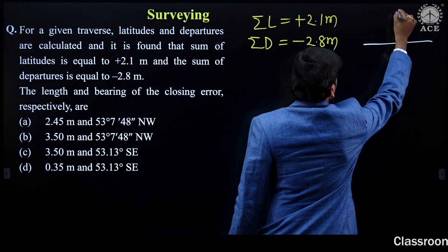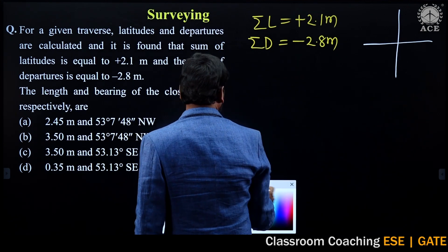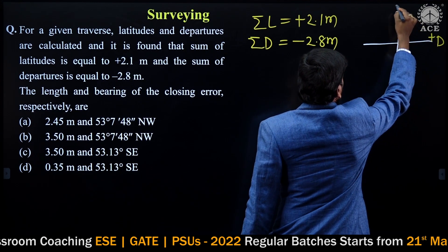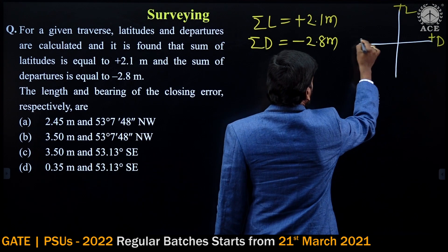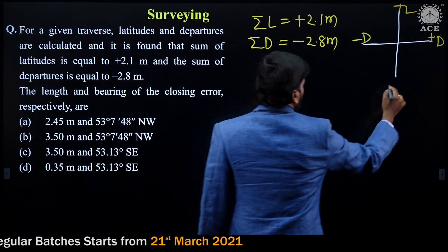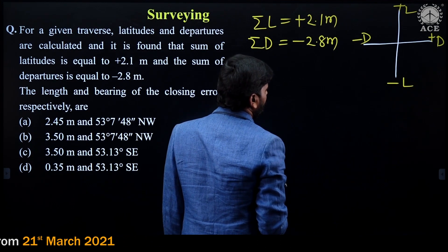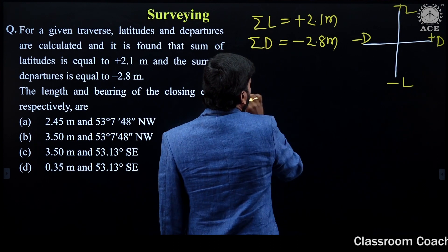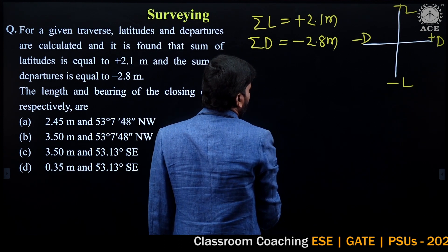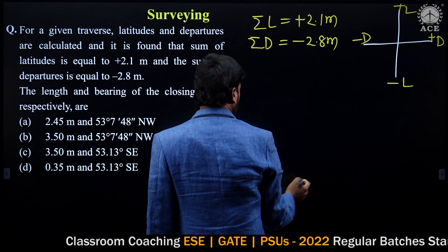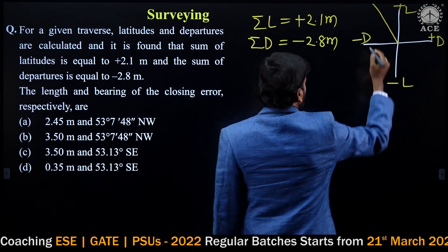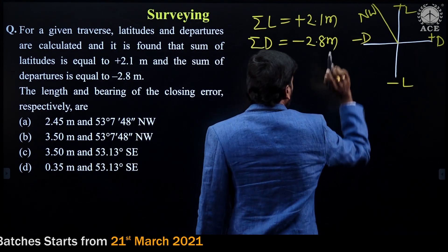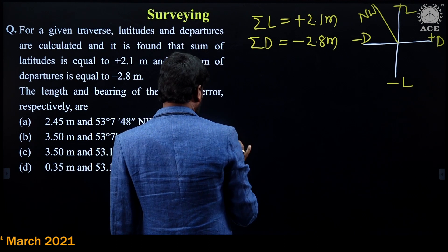Positive departure is in one direction, positive latitude in another. Here we have a negative departure and a positive latitude, so the line lies in the North-West quadrant. This is the North-West quadrant, so now the quadrant is clear.